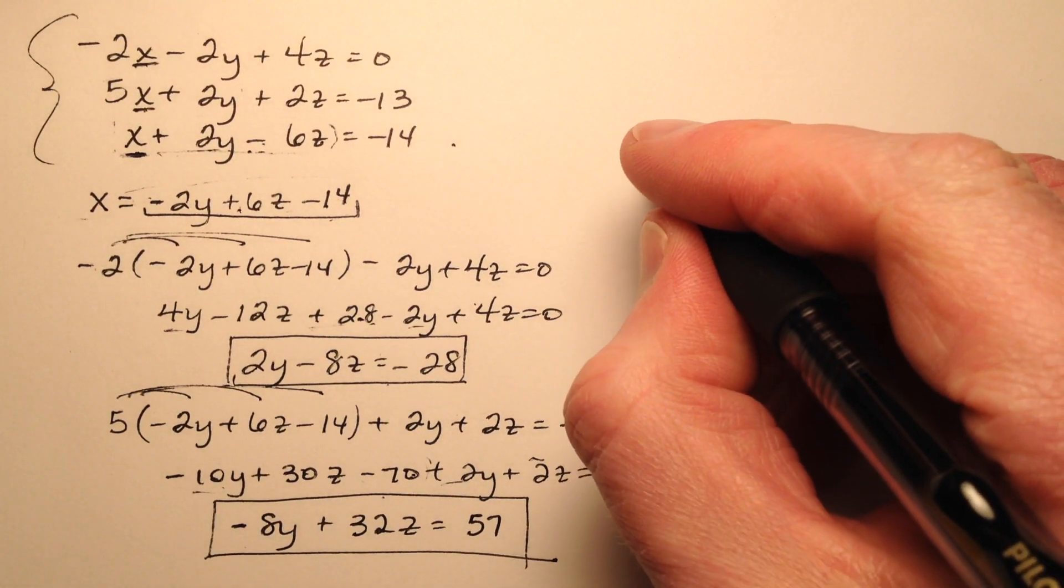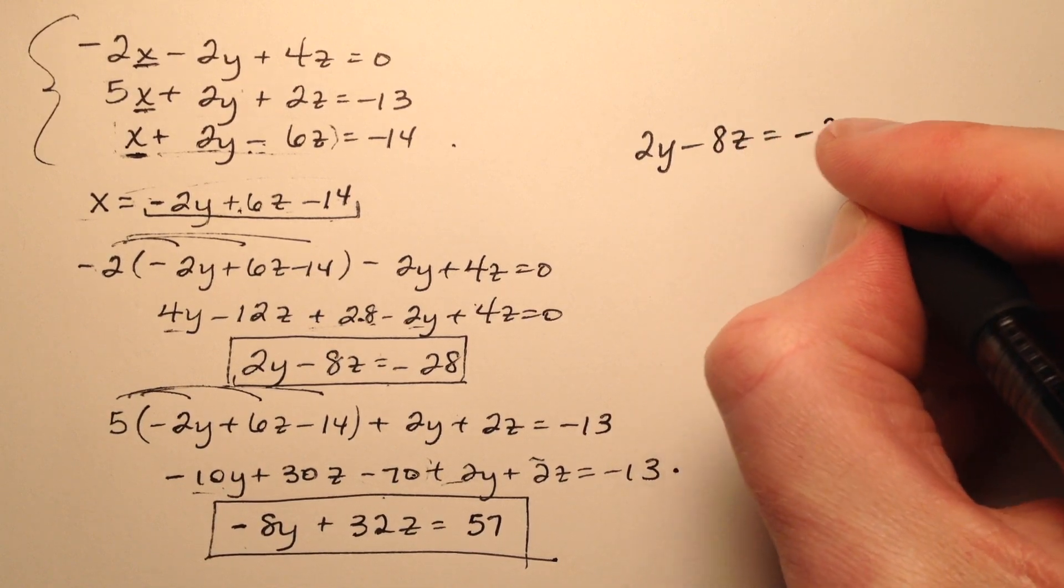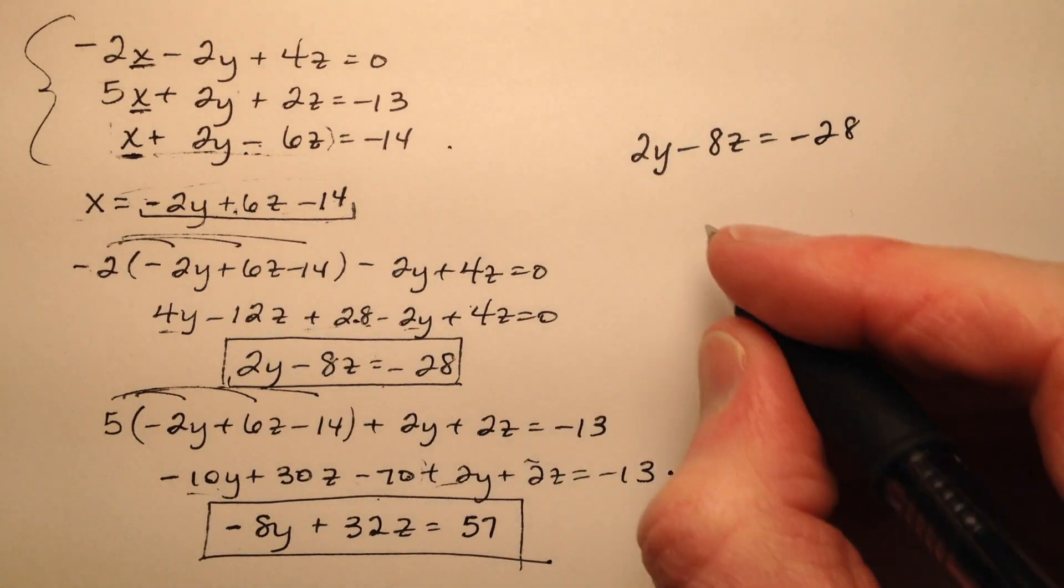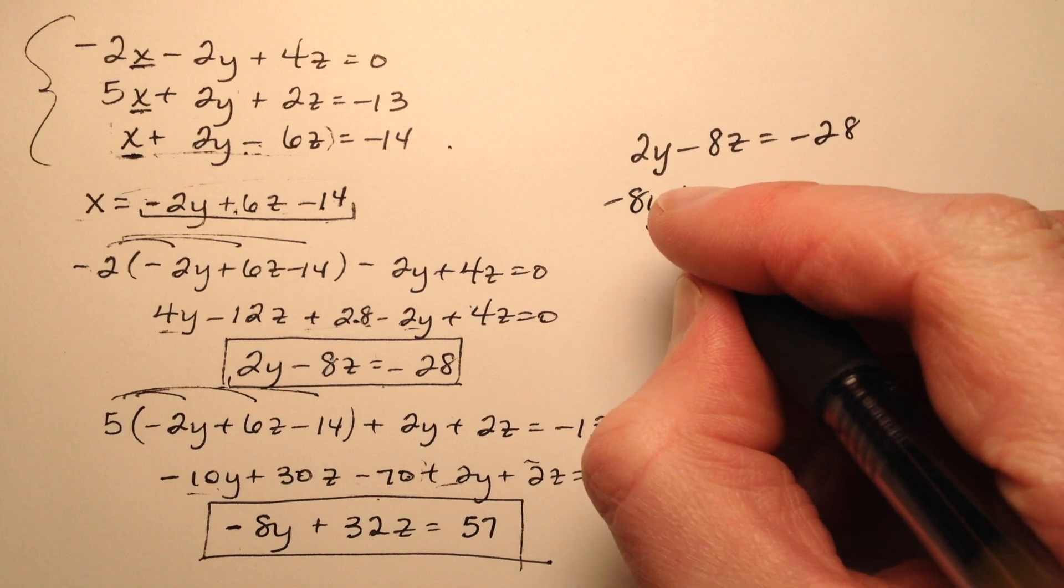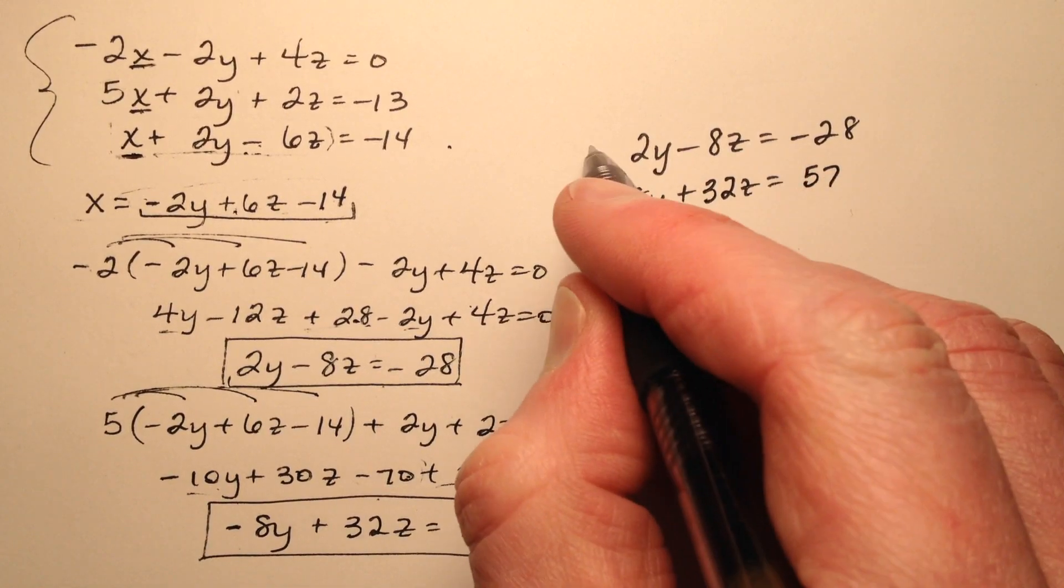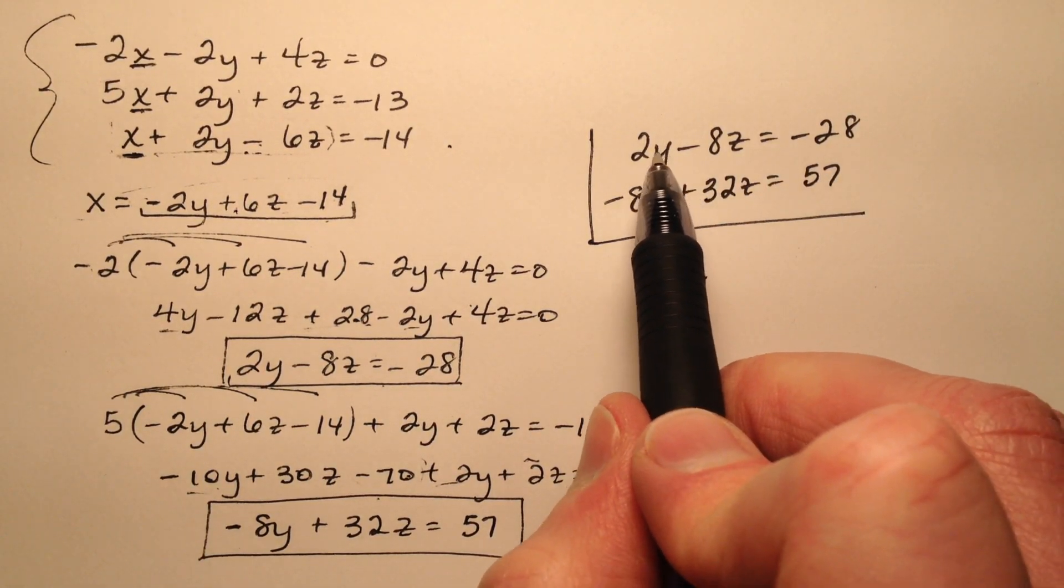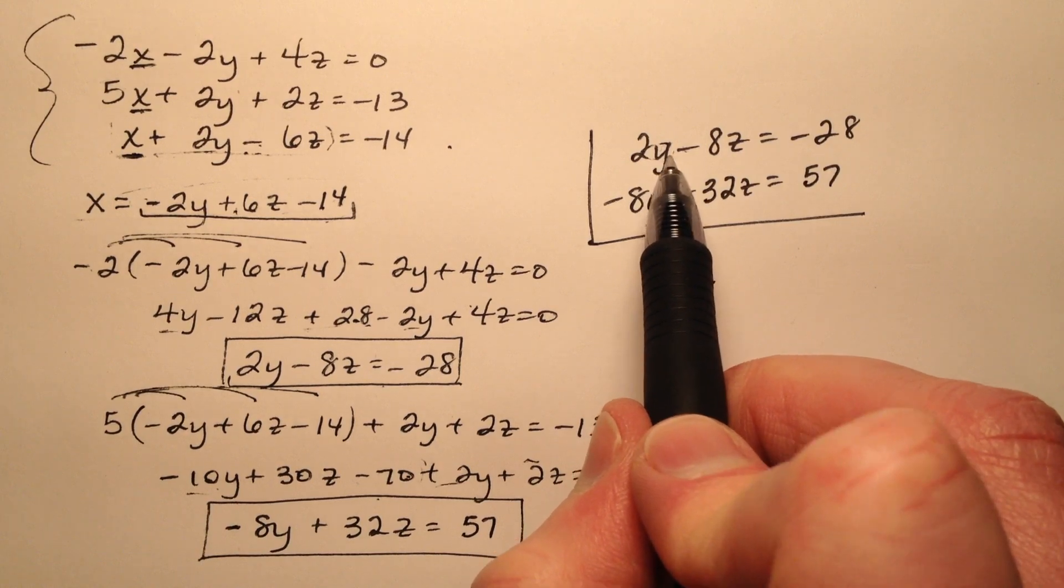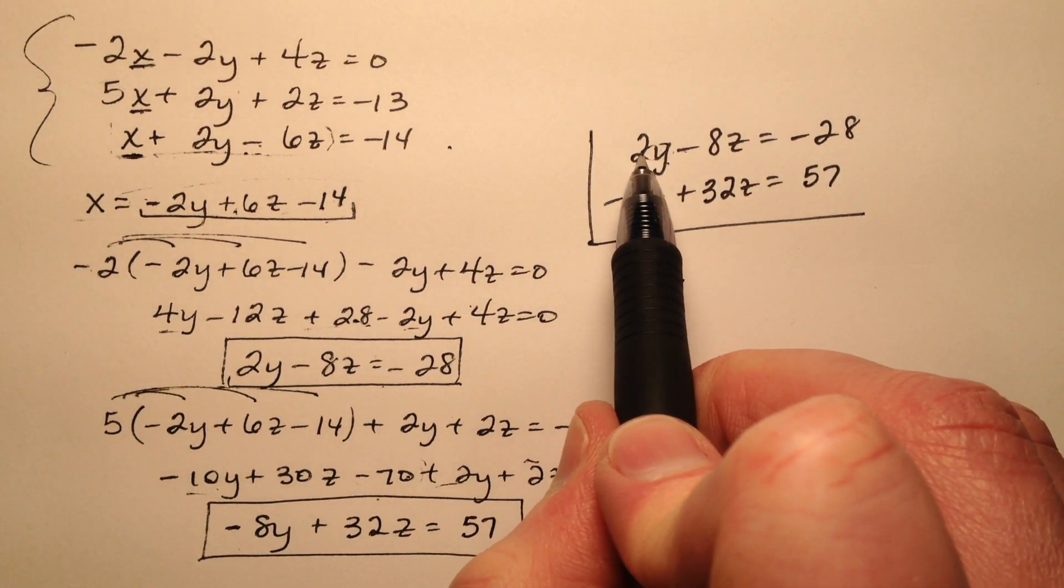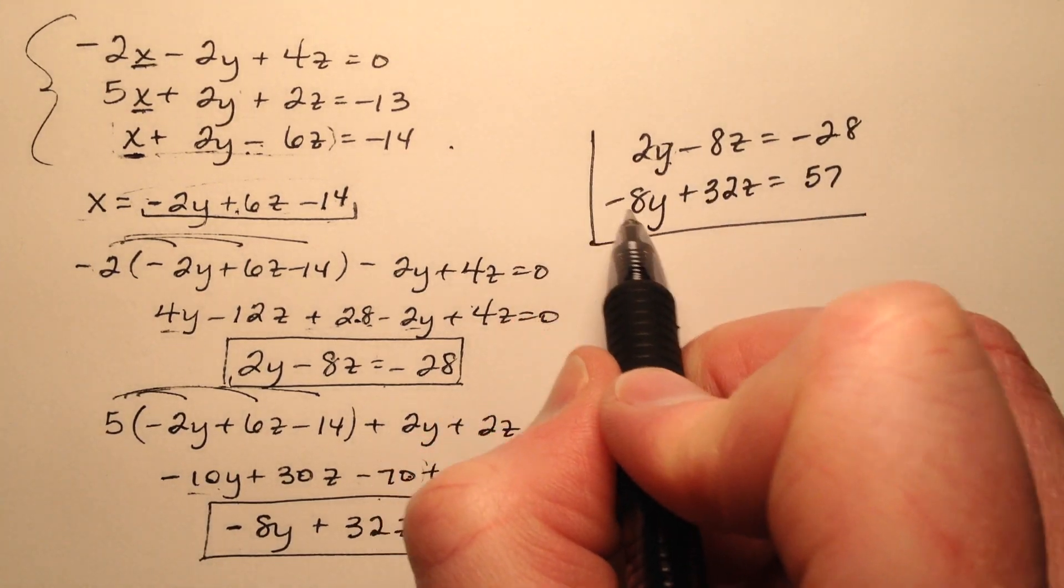So we're going to say 2y minus 8z equals negative 28, and also negative 8y plus 32z equals 57. Looks like elimination would be a fine choice here. We could also use substitution and solve for y here because it looks like the coefficient is 2 and all these values are also even, but let's just go ahead and work it this way.